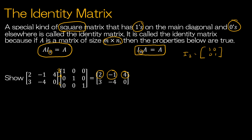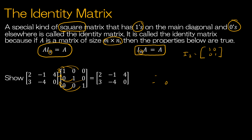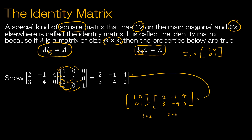Continuing: 3, negative 4, 0 gives 3 plus 0 plus 0, then 0 plus negative 4 plus 0, and 0 plus 0 plus 0, which is 0. If I were to multiply the other way, this 2 by 3 matrix would need a 2 by 2 identity matrix — 1, 0, 0, 1 — on the left side, but we would still end up back where we started.